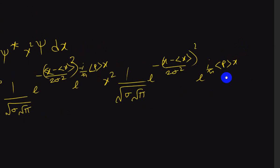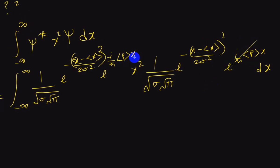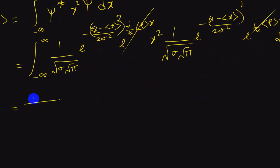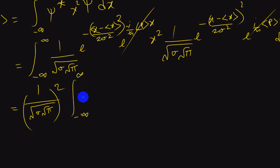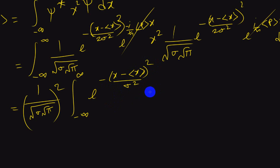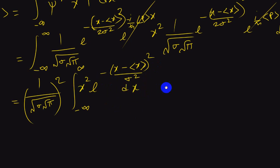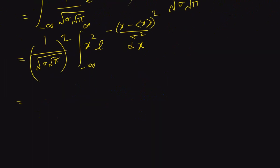After cancellations we have 1 over root sigma root pi, times e to the minus x minus the expectation value of x, quantity squared over 2 sigma squared — which is not going to be 2 this time, it's going to be just sigma. Then we have x squared over here, and we have dx.